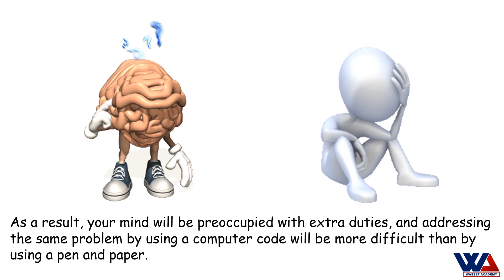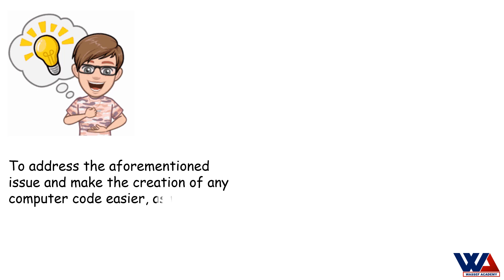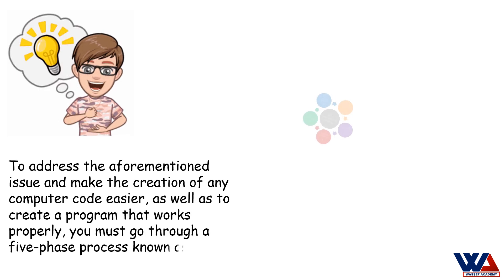As a result, your mind will be preoccupied with extra duties, and addressing the same problem by using a computer code will be more difficult than by using a pen and paper. To address the aforementioned issue and make the creation of any computer code easier, as well as to create a program that works properly, you must go through a five-phase process known as the program development cycle.